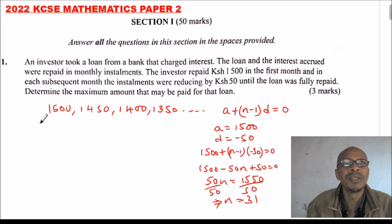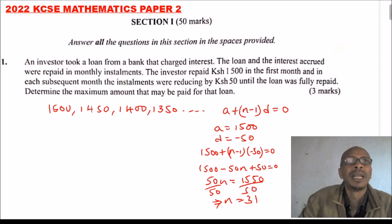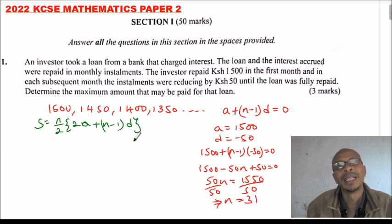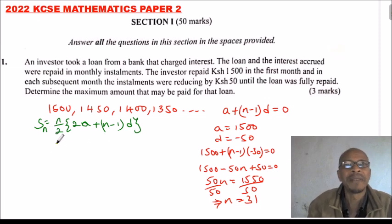We can now use this formula and say S is equals to n over 2 into bracket 2a plus (n-1) into bracket d. This is the sum of the nth term, and we have n, so this is the sum of the sequence.